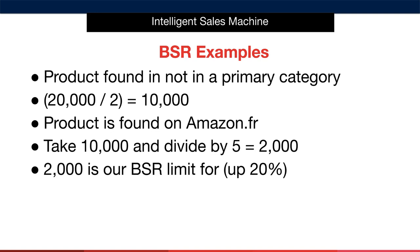Our final example is not located in a primary category, so we take our BSR of 20,000 and divide by two, giving us a new BSR limit of 10,000. The item was found on Amazon France, so we take our BSR limit and divide by five, giving us a new BSR limit of 2,000. We will therefore only deem items with a BSR of 2,000 or less as viable in that market, or 20% more than 2,000.